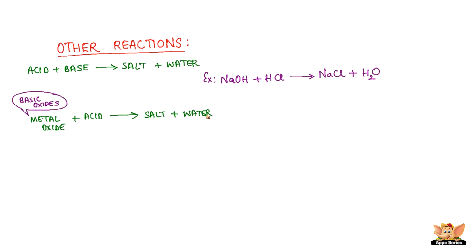Metal oxides are basic oxides. When they react with acid, salt and water are formed. Cupric oxide reacting with hydrochloric acid gives cupric chloride and water is an example of this kind.